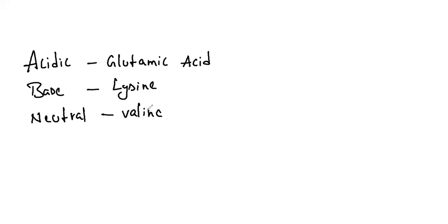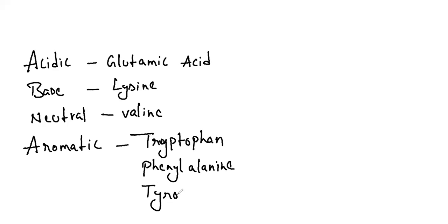And we have aromatic amino acids as well. Aromatic amino acids: we have tryptophan, we have phenylalanine, and we have tyrosine. These things are there for aromatic.